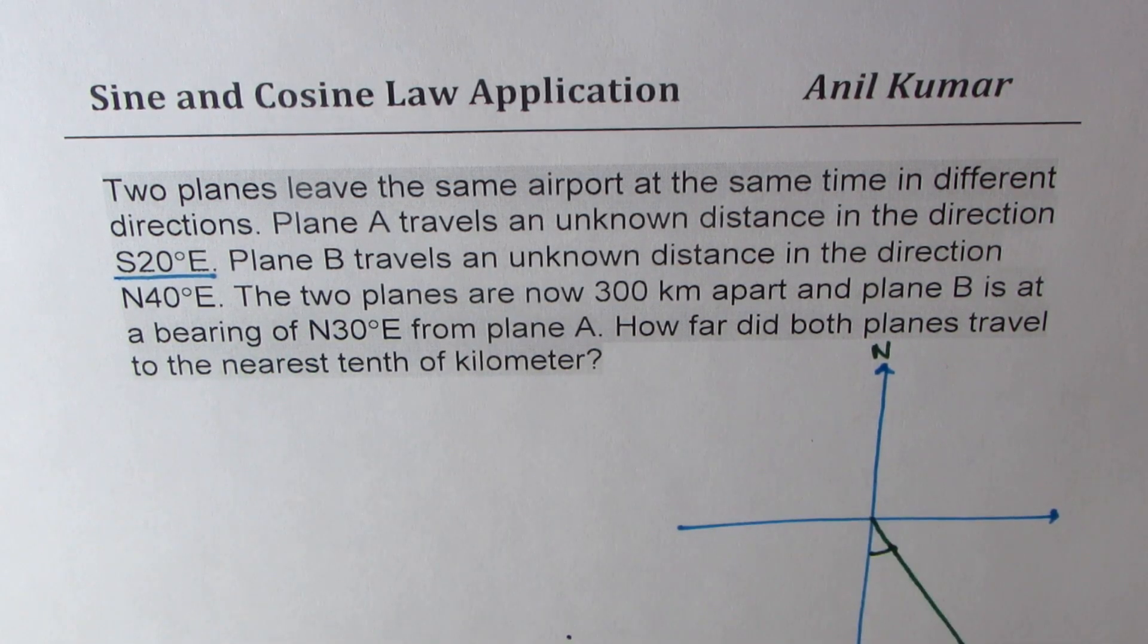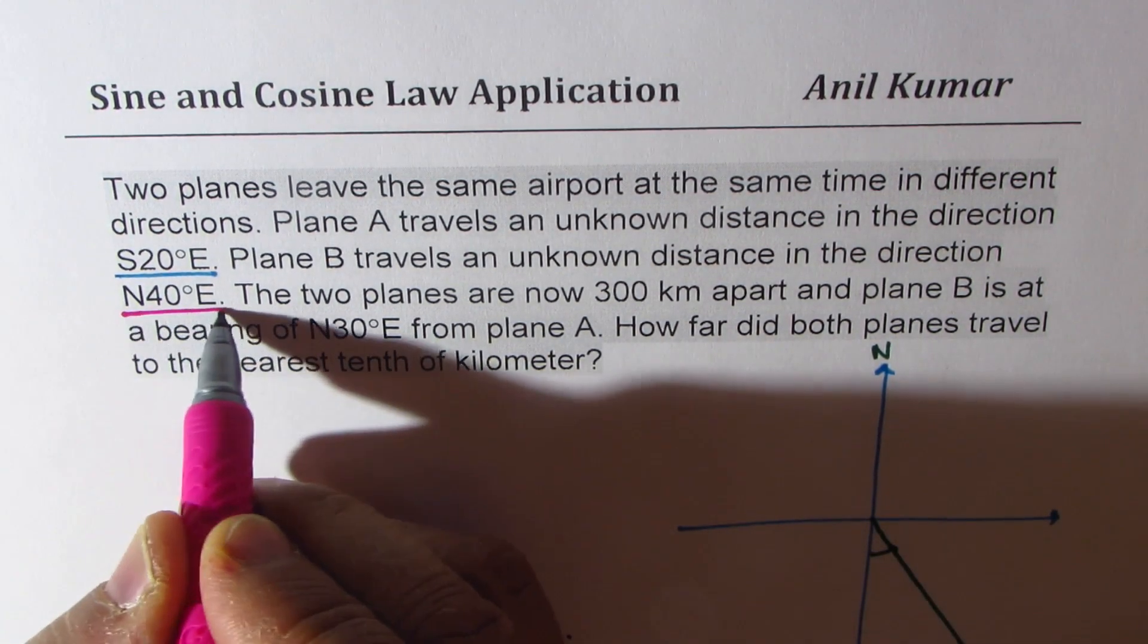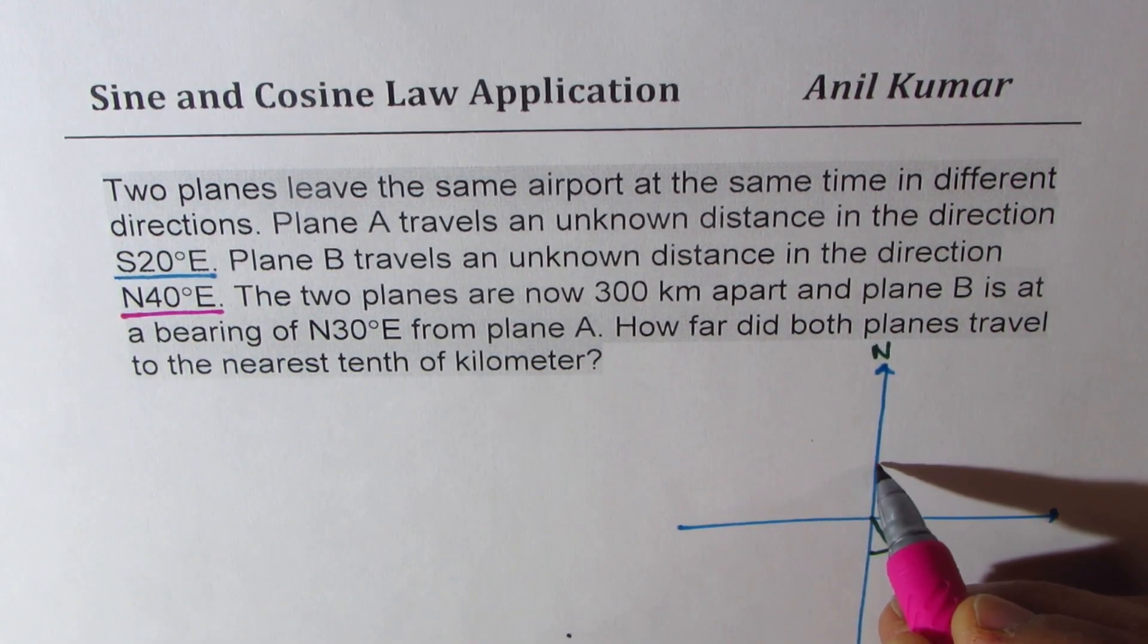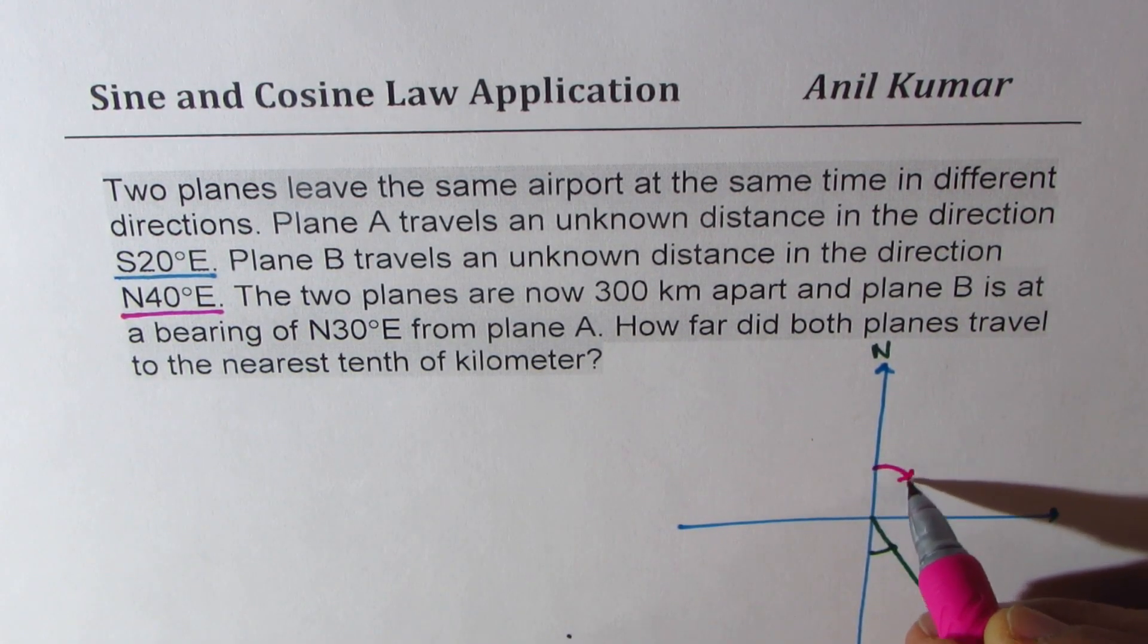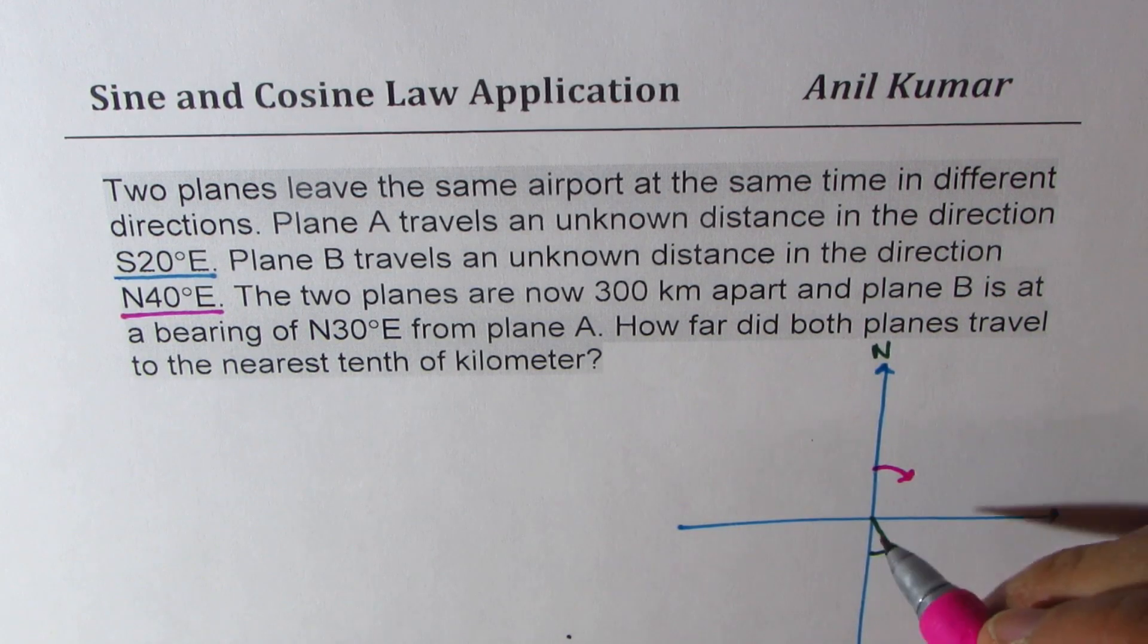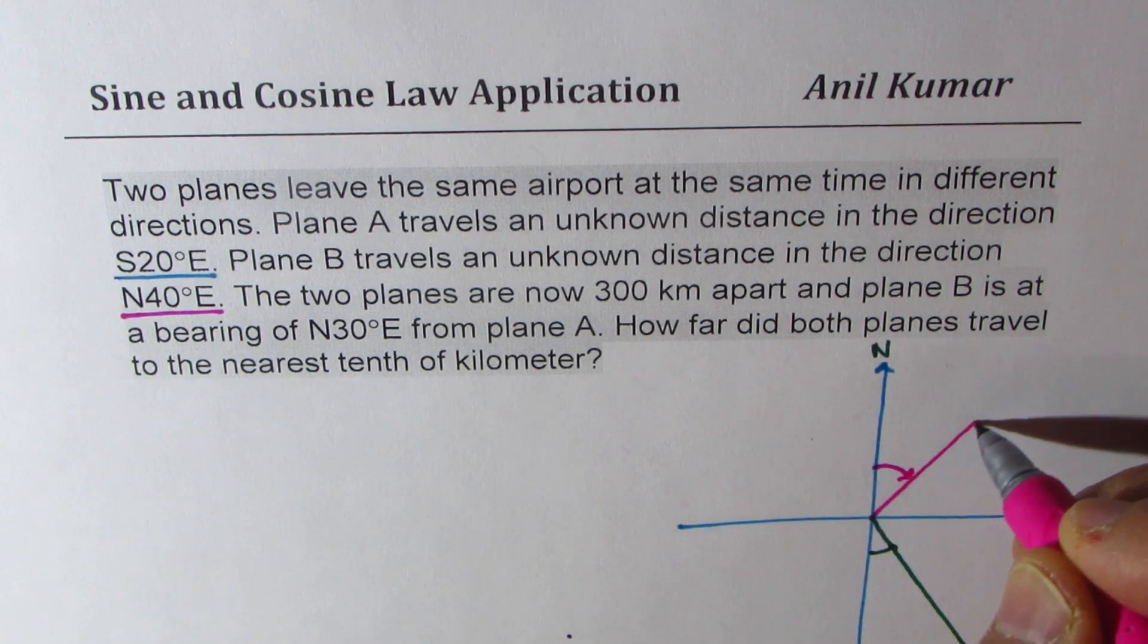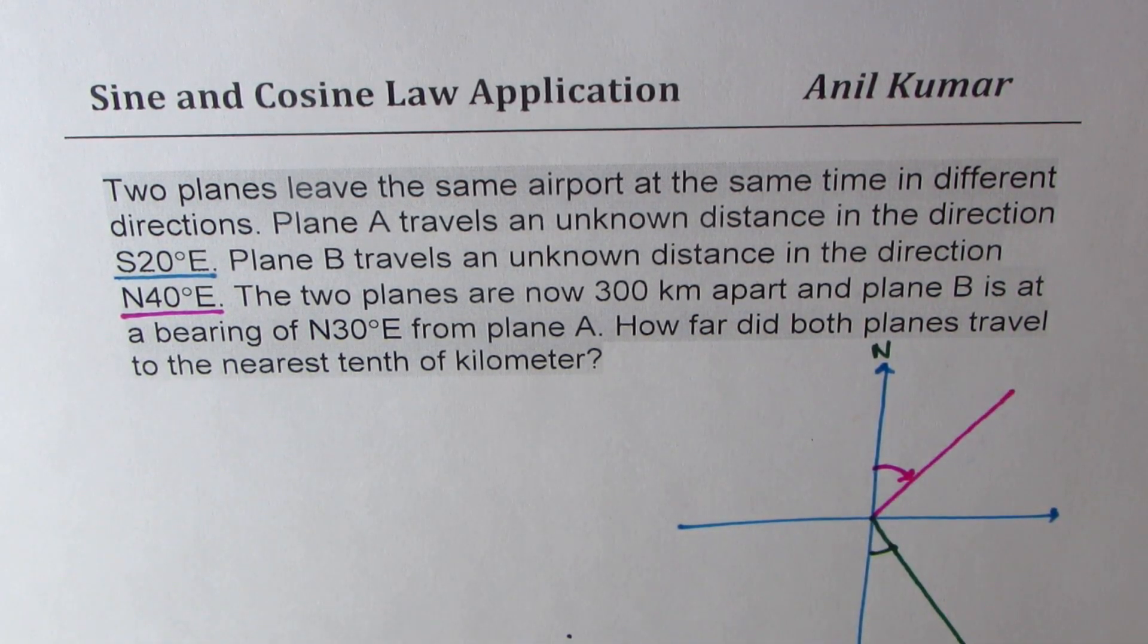Plane B travels an unknown distance in the direction which is from north 40 degrees east. So from north we are looking for 40 degrees, let's say that is 40 degrees. And let this be the direction for the second plane. So let's call these as A and B.